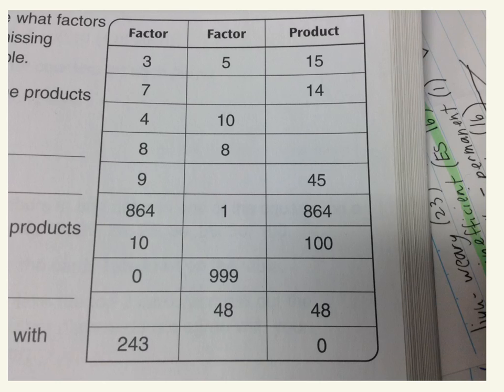Hi, this is a quick video to help with Everyday Math homelink 7.2. We're talking about multiplication, specifically factors and products. Here we have this table. The first thing we need to do is fill this out with factors and products.